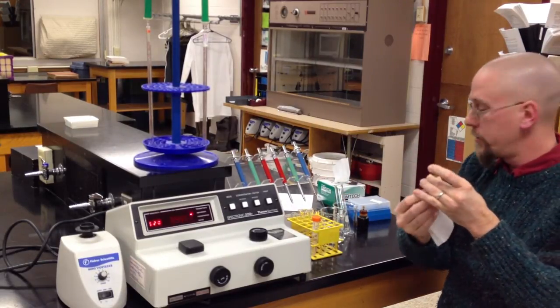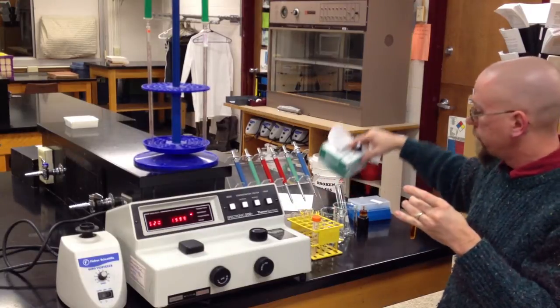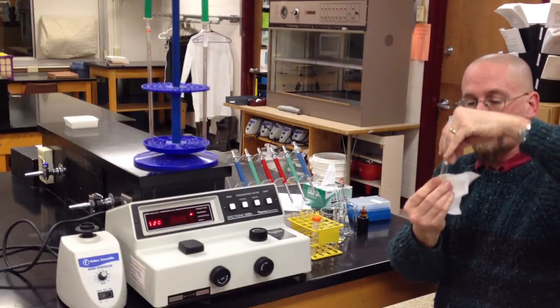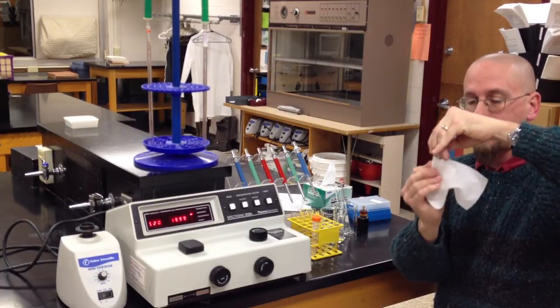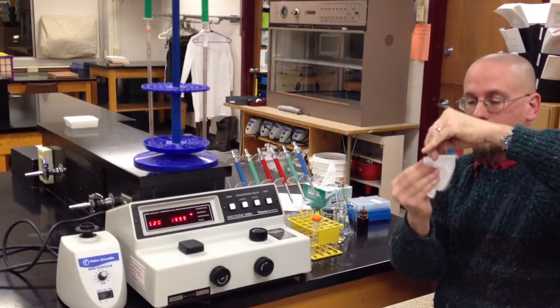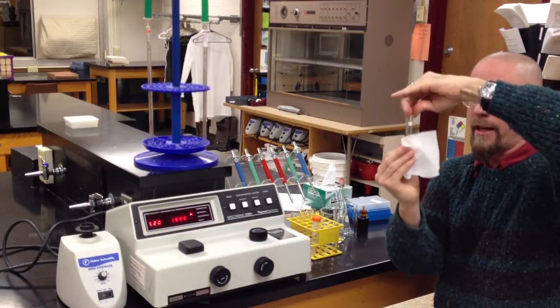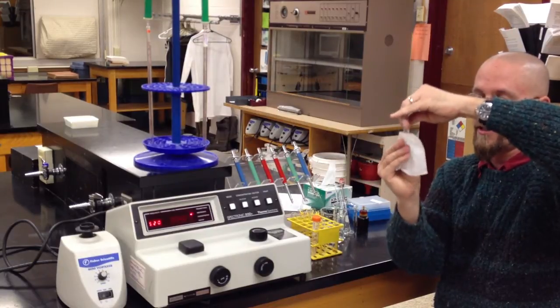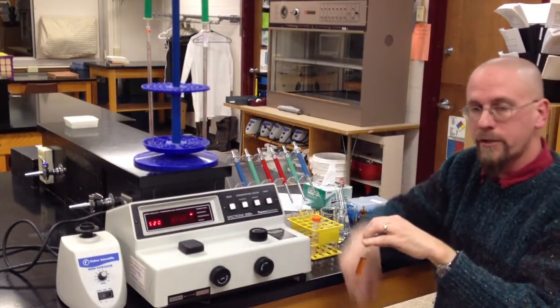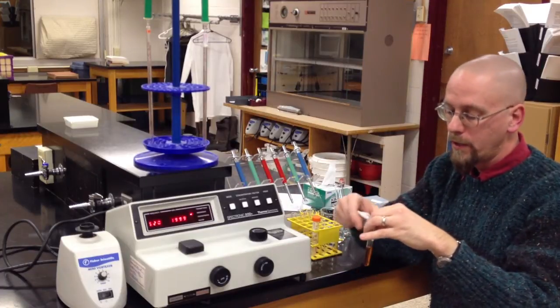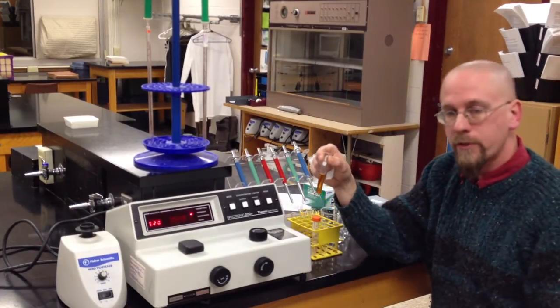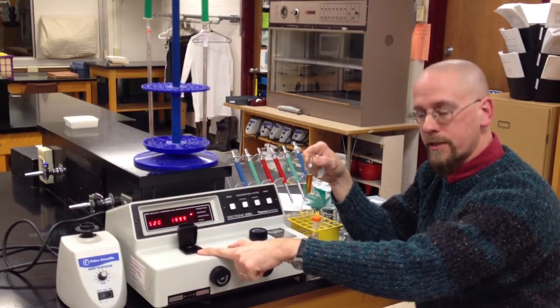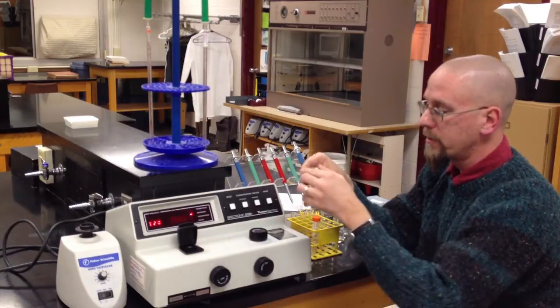Once you've done this, what you want to do is grab a kim wipe and clean the glass. You want to make sure that you do not grab these cuvettes with your fingers below the white dot because the oils and greases on your fingers get on the glass and interfere with the light going through the instrument. There's also a white line on the front of the cuvette that lines up with a score mark on the sample chamber.